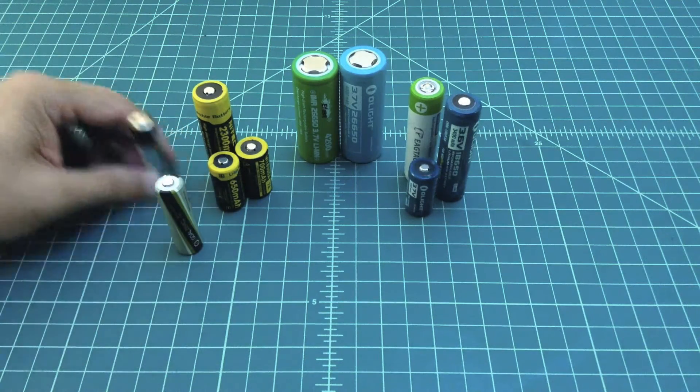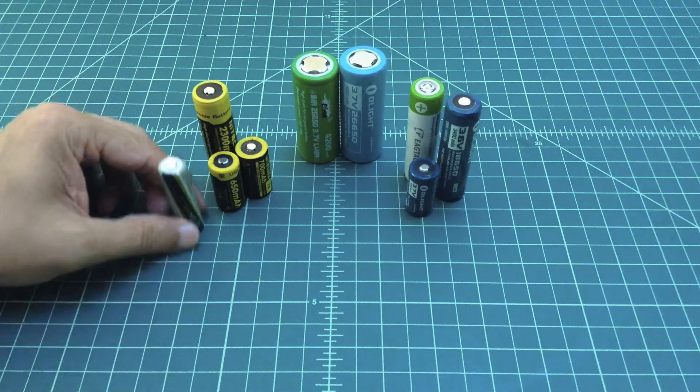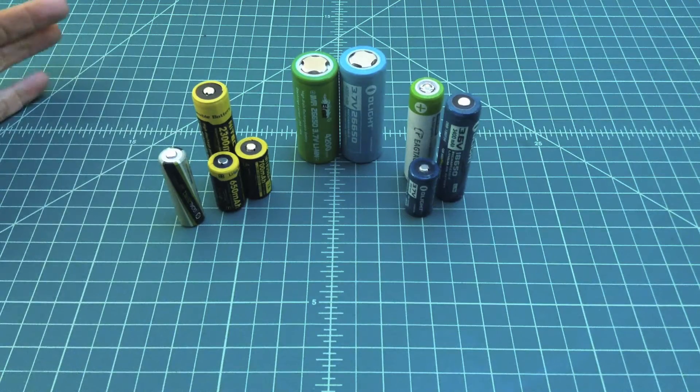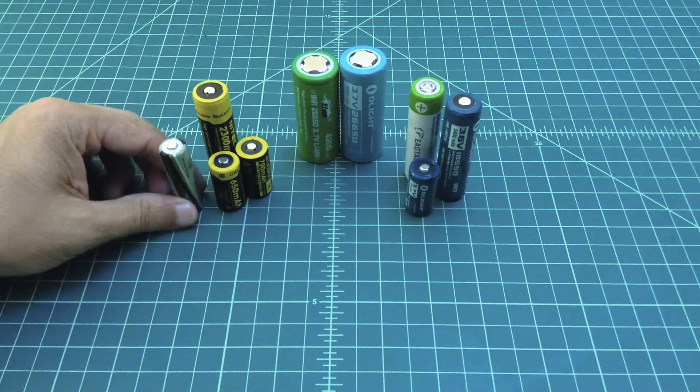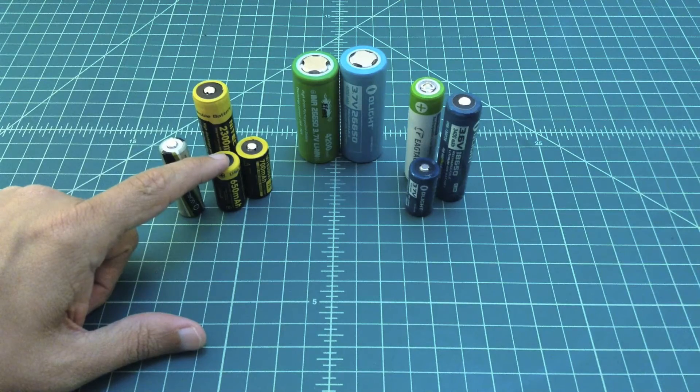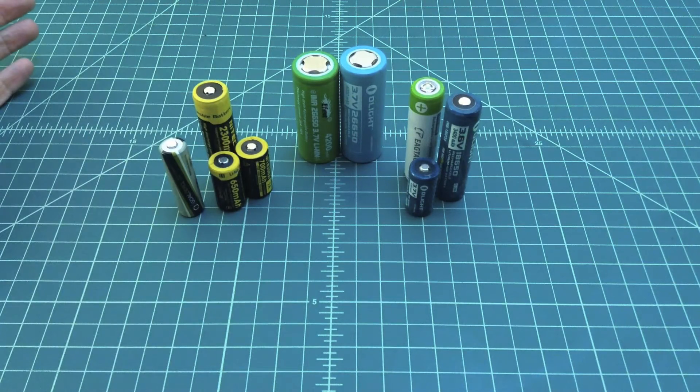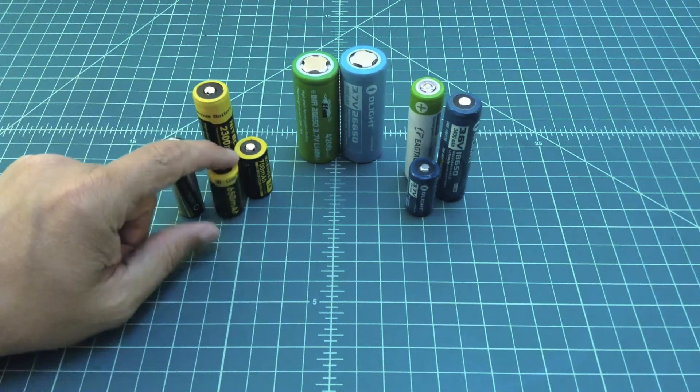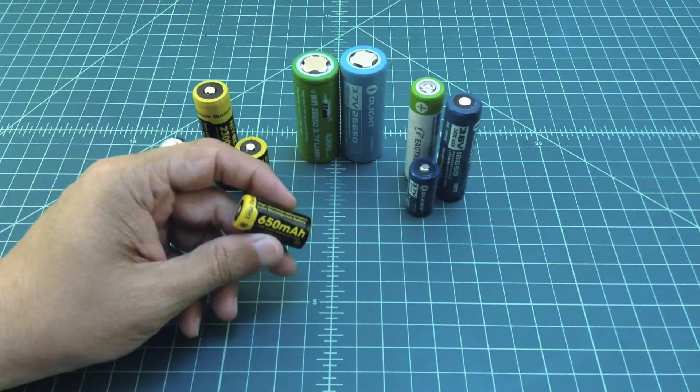When you start to talk about some of these different batteries, what's interesting is that this gold 0 AA battery is somewhere a little over 2000 milliamps per hour, and then this rechargeable 16340 is less than that, it's at 650 milliamps per hour.